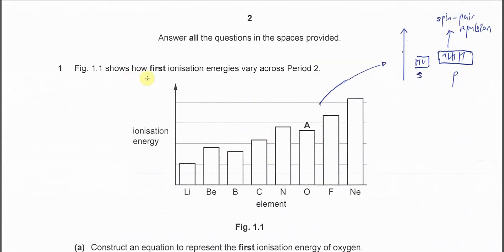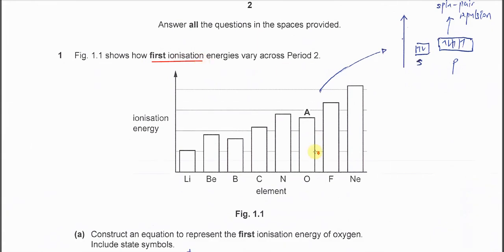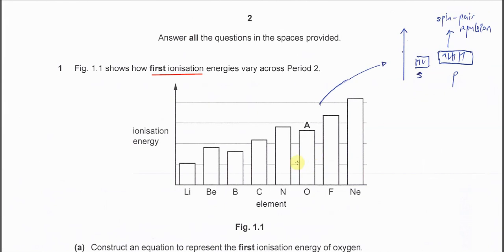Figure 1 shows how first ionization energy varies across period 2, and from here we know that there are some irregularities. Later we will discuss about that.